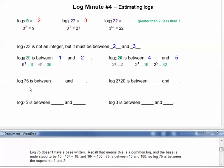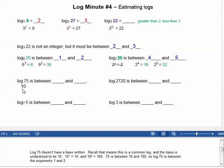Log 75 doesn't have a base written. Recall that means this is a common log, and the base is understood to be 10. 10 to the first is 10, 10 to the second is 100. 75 is between 10 and 100, so log of 75 is between the exponents 1 and 2.